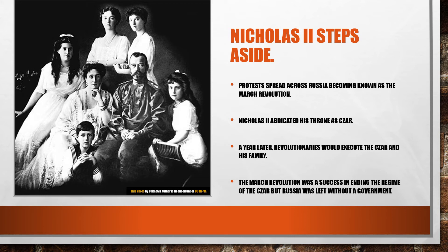Protests spread across Russia in what became known as the March Revolution. Nicholas II abdicated — giving up his throne as Czar. Unfortunately, a year later, revolutionaries executed the Czar and his entire family. You may know the story of Anastasia, the Russian princess who was perhaps said to have escaped, though most historians believe she was also killed. The March Revolution successfully ended the regime of the Czar but left Russia without a government.